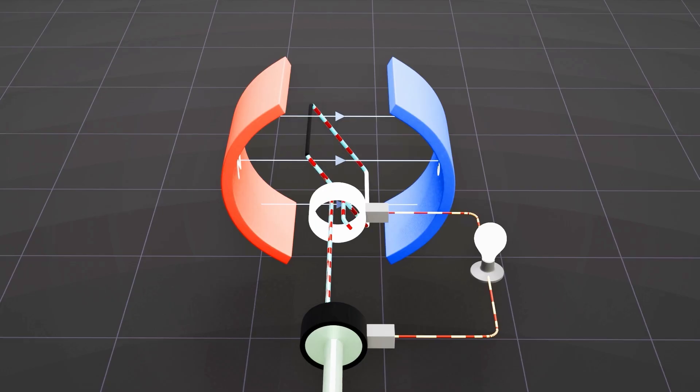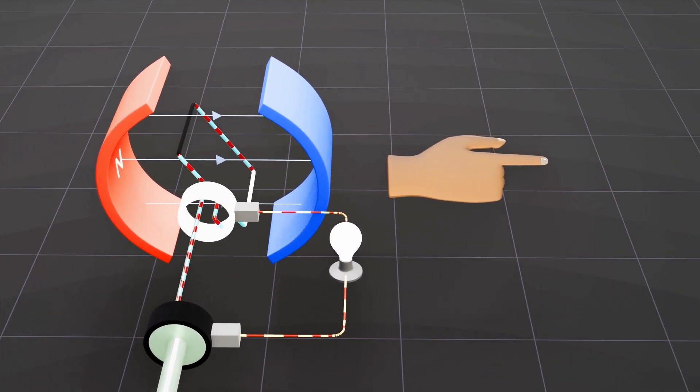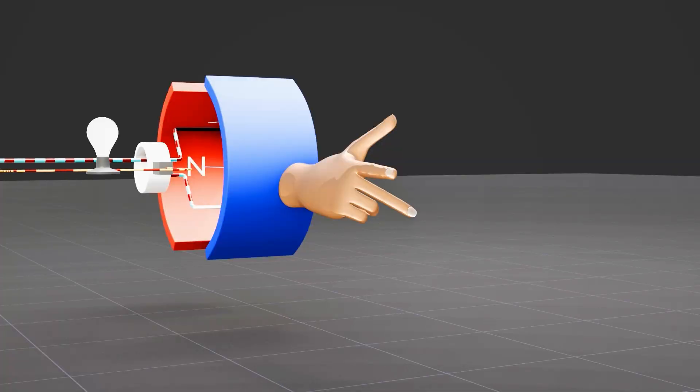The direction of this current can be determined using the right-hand rule. By pointing your right index finger in the direction of the magnetic field and your thumb in the direction of the coil's rotation, your middle finger will indicate the direction of the current.